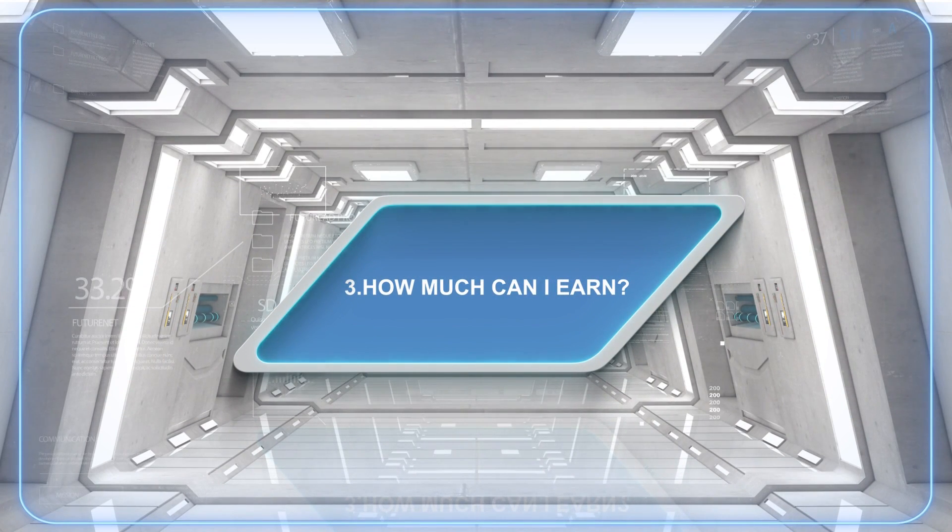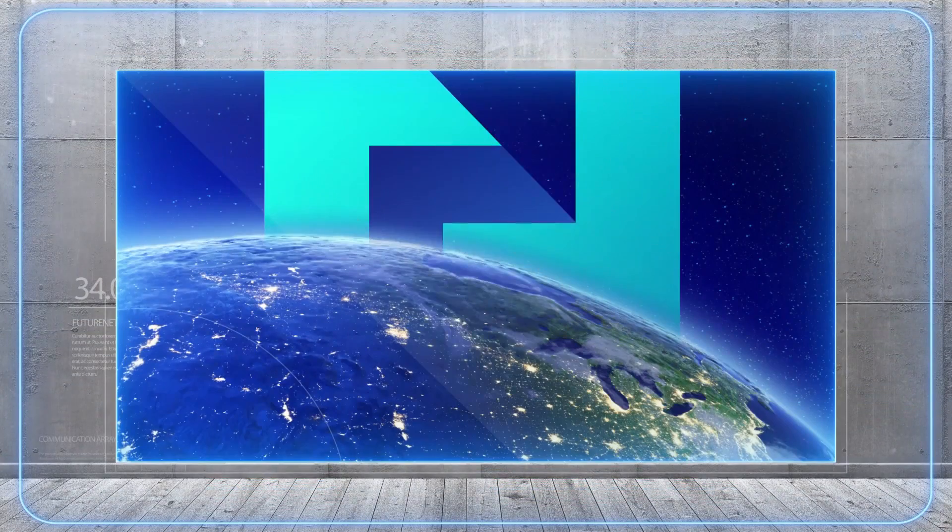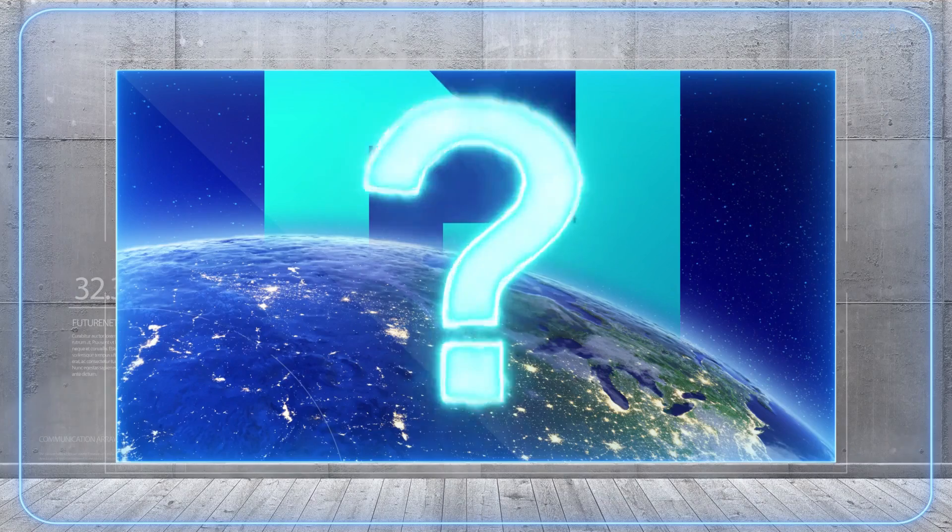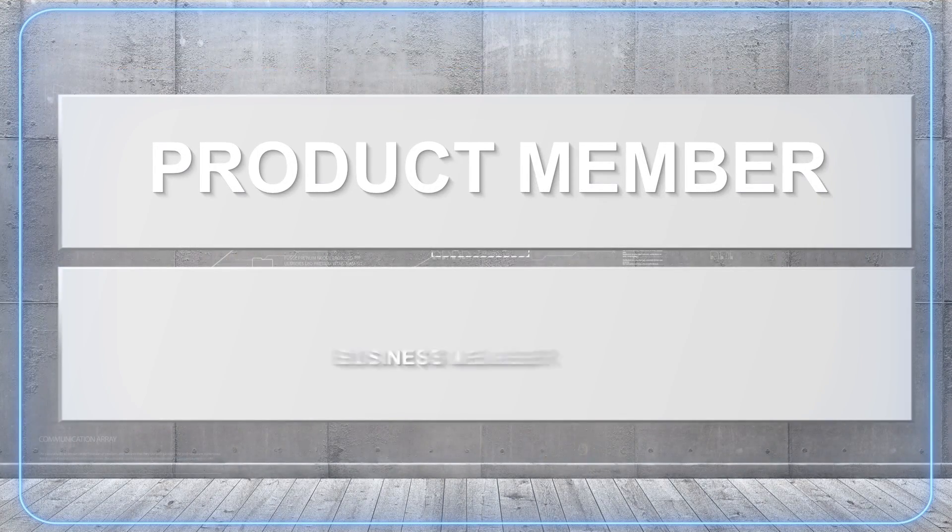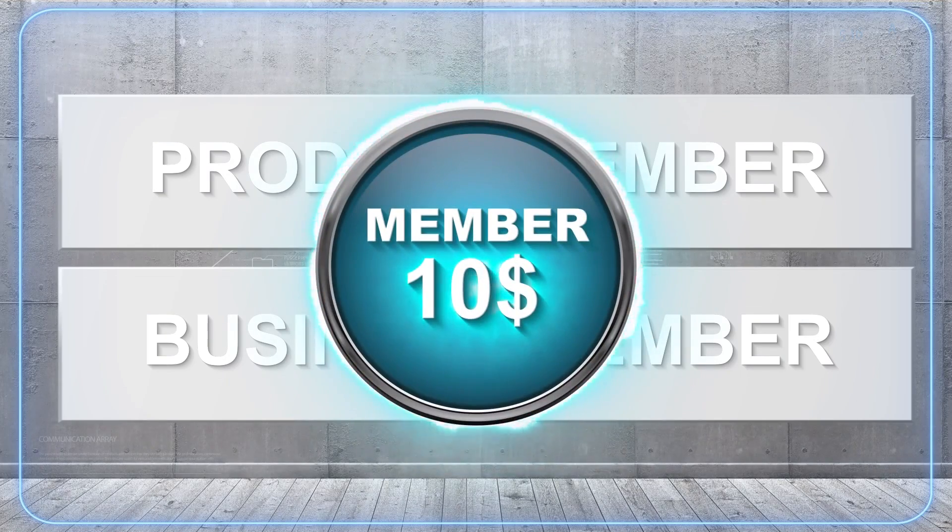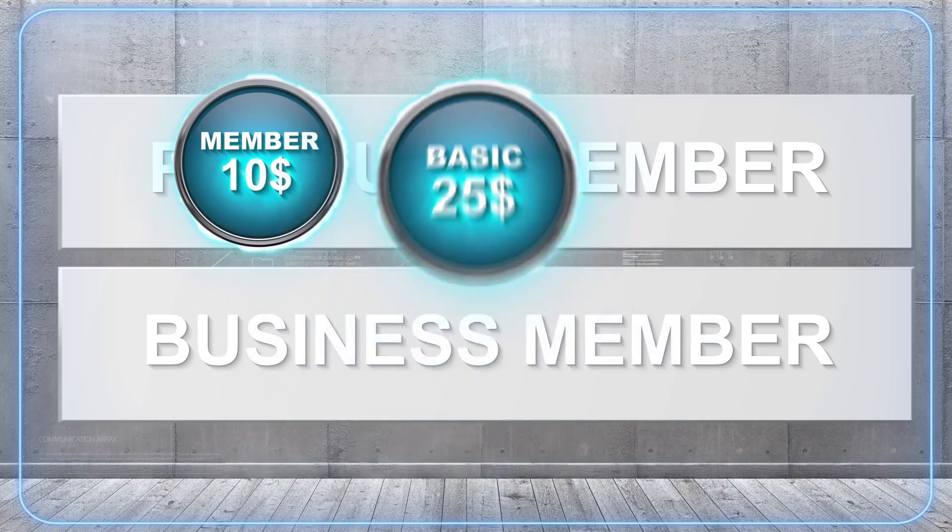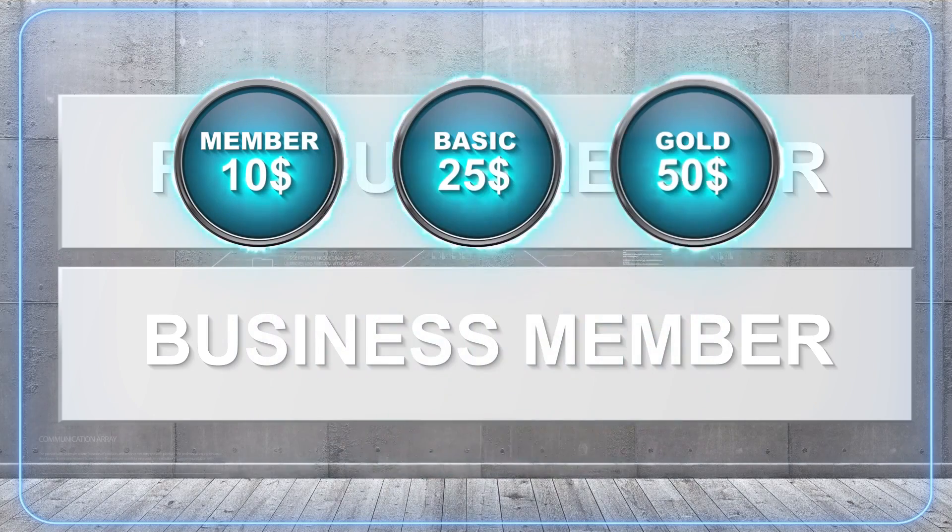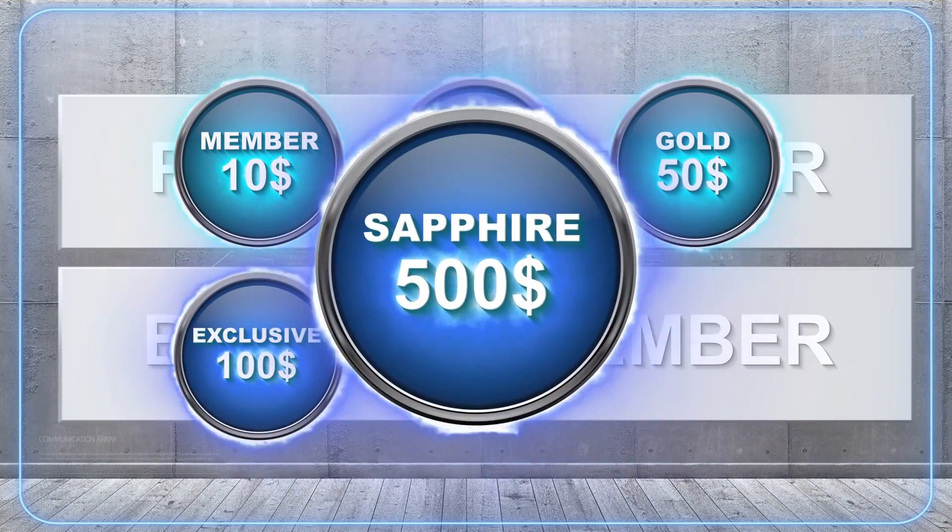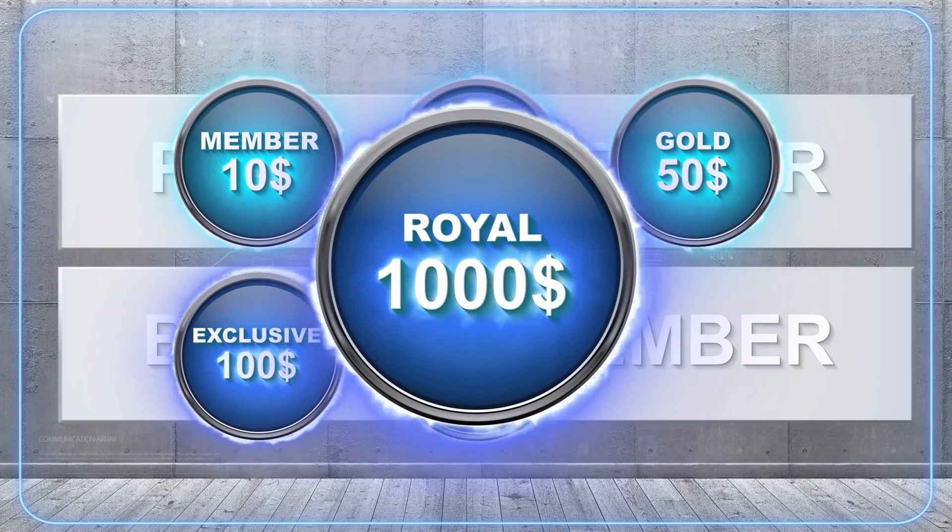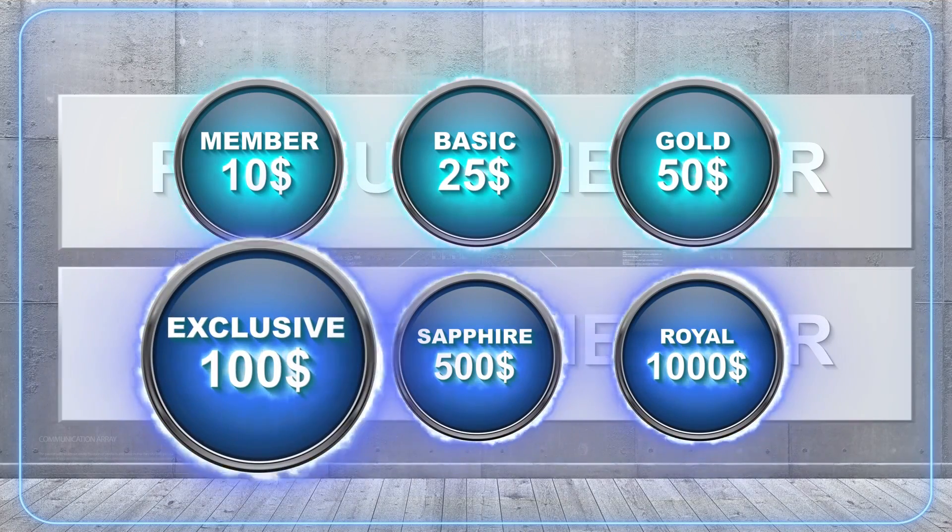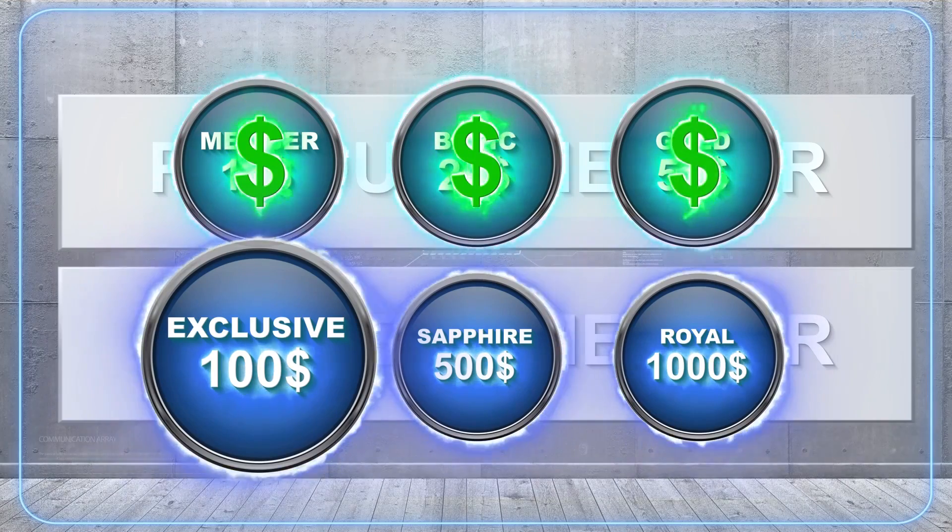In a moment, you will get to know the answer to all these questions. What are the possibilities of starting your own business with FutureNet? Six options divided into two levels of activity are available. Basic level: Member $10, Basic $25, Gold $50. Business level: Exclusive $100, Sapphire $500, Royal $1000. To hold exclusive level, you have to purchase earlier the product at the levels Member, Basic, and Gold.